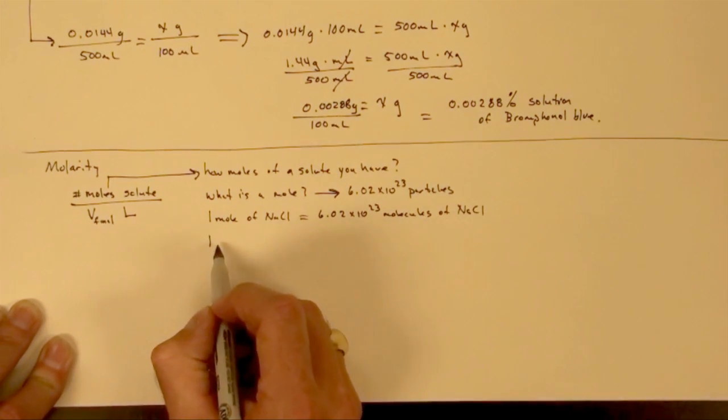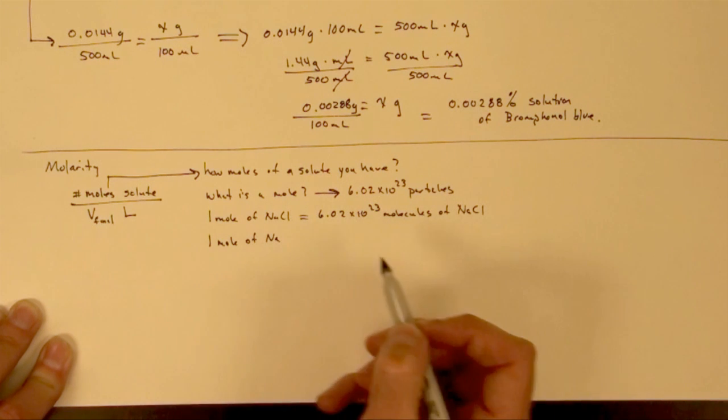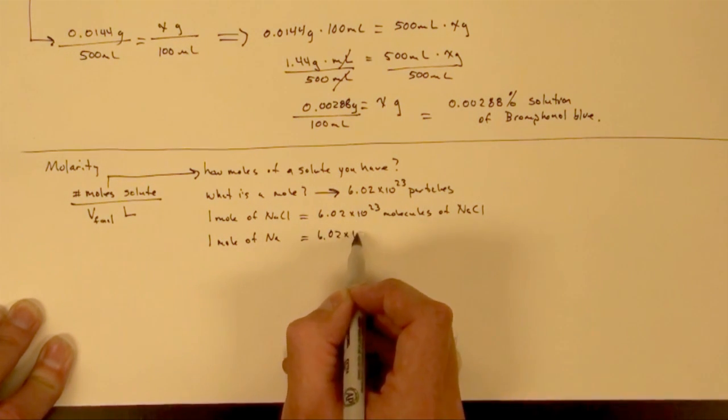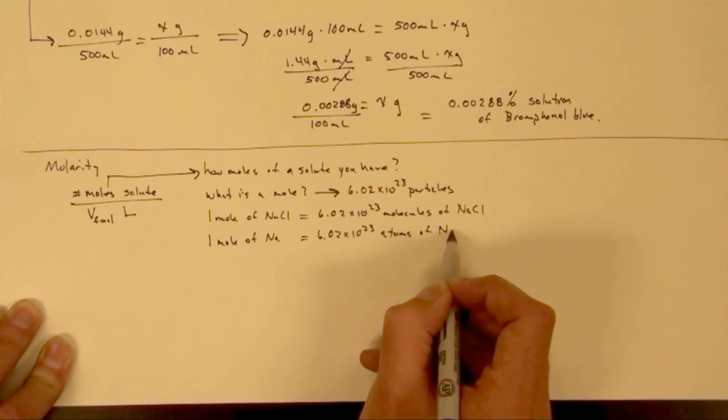If I have one mole of sodium, that will equal 6.02 times 10 to the 23rd atoms of sodium.